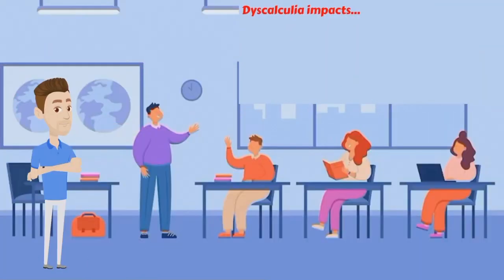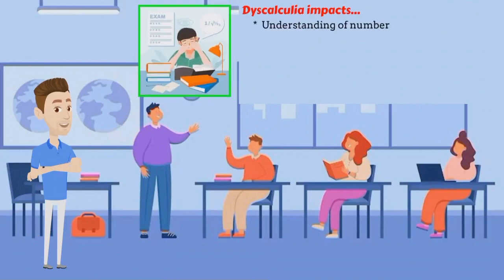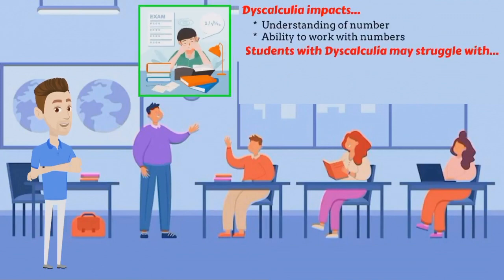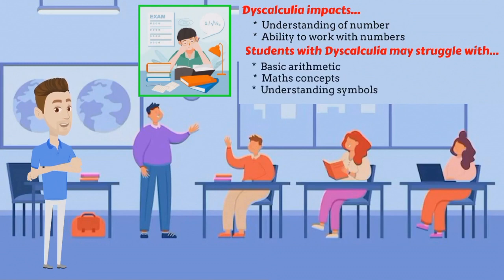Dyscalculia is a learning disability that affects a student's ability to understand and work with numbers. People with dyscalculia may struggle with basic arithmetic, maths concepts and understanding mathematical symbols.